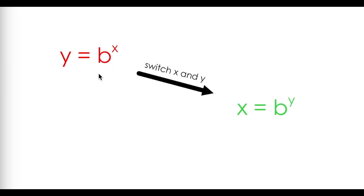So for an exponential function, like y equals b to the power of x, switching x and y would result in x equals b to the y.